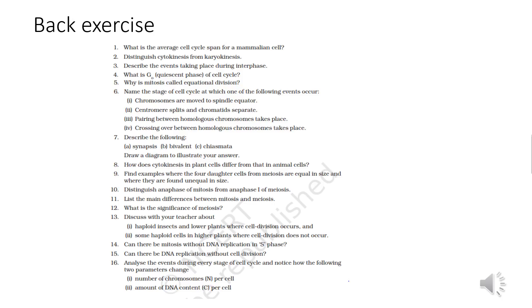Why is mitosis called equational division? I think everyone knows. Name the stage of the cell cycle at which the following events occur: chromosomes are moved to the spindle equator — metaphase; centromere splits and chromatids separate — anaphase stage; pairing between homologous chromosomes — zygotene of prophase 1; crossing over — pachytene stage.